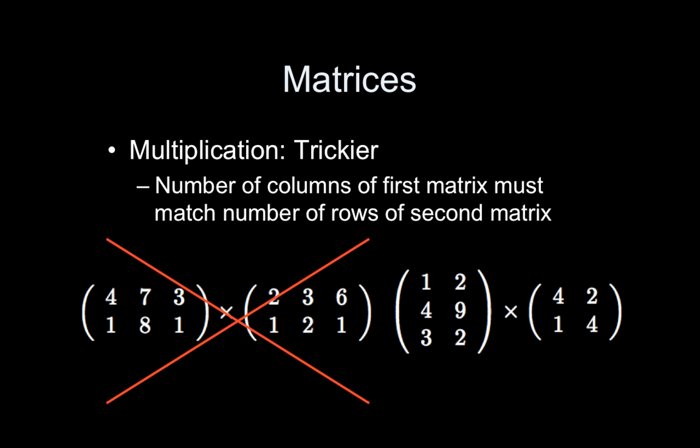So in the case of matrix multiplication, you actually do not want your matrices to be the same dimension. So you can't take a two by three and multiply it by a two by three. Instead, the only requirement is that the number of columns in the first is equal to the number of rows in the second.